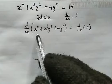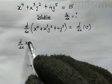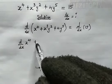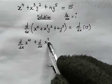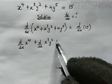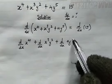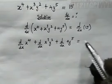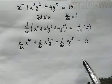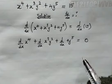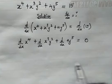From here, we open up this bracket. We get the derivative of x to the power of 4 with respect to x, plus d/dx of x cubed y squared, plus d/dx of 4y to the power of 5. This is equal to the derivative of a constant, and that is 0. Now we're going to treat y as a function of x.